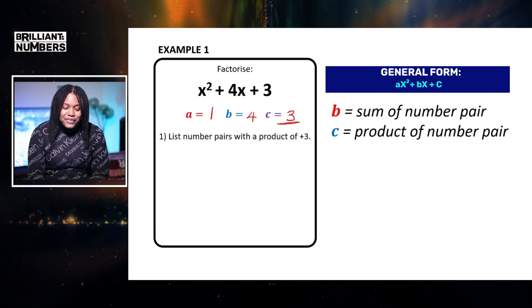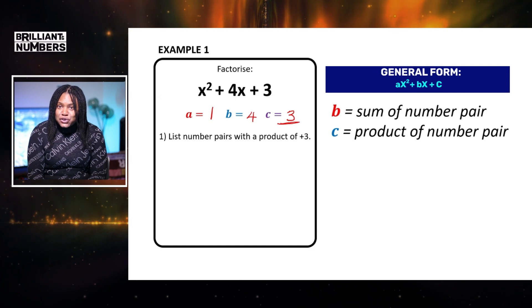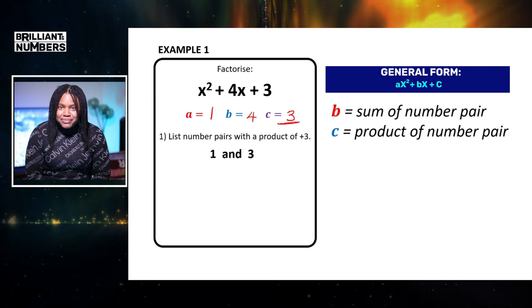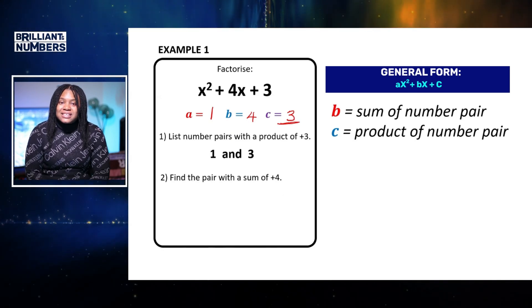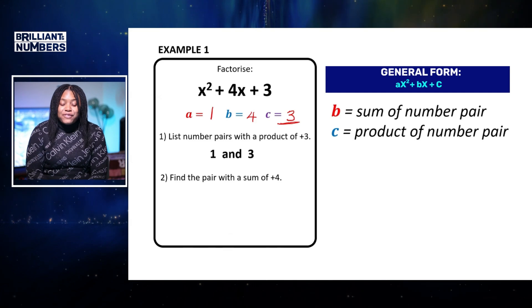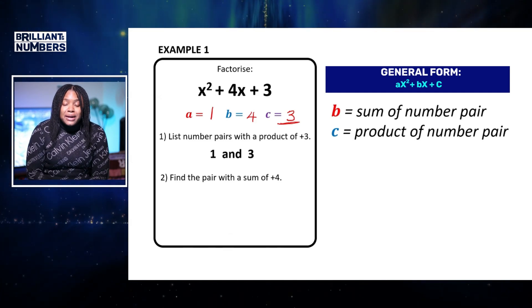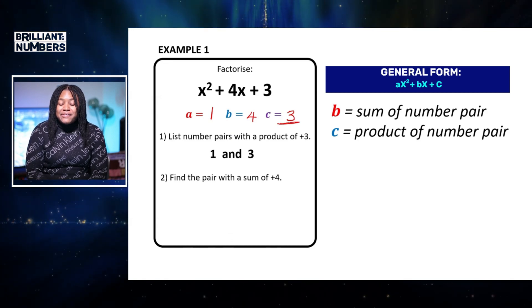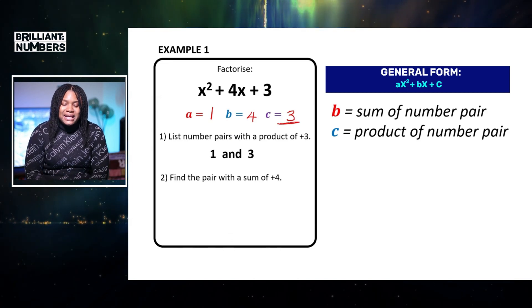So the factors of three, here we're asked to list the pairs with a product of three, and the answer is one and three. Now we can see here that we're also asked to find the pair of the sum of four. So one plus three gives us four, so that means this pair fits the criteria. They add to four, and they multiply to give us three.